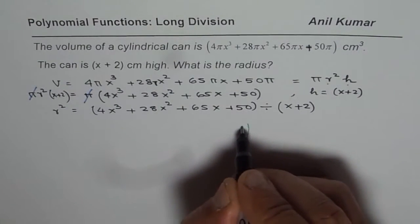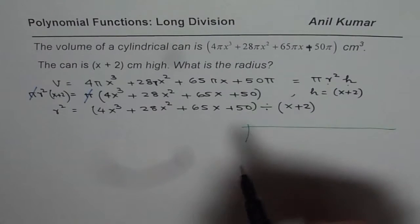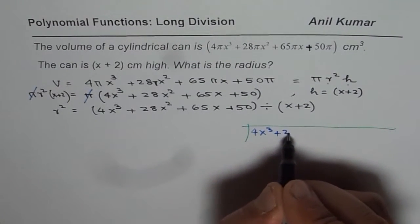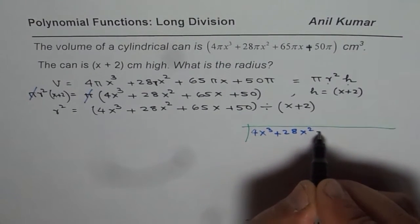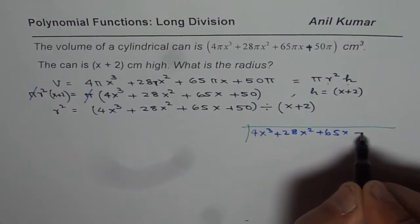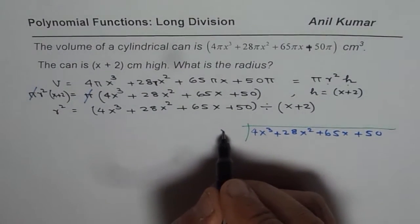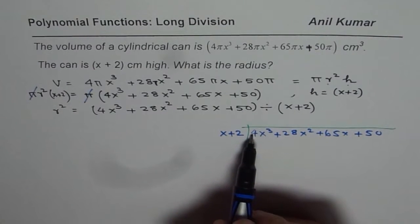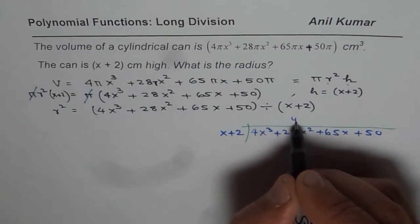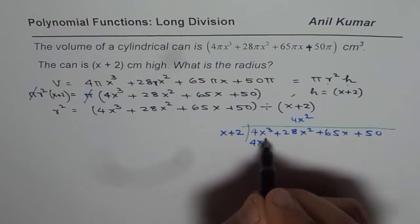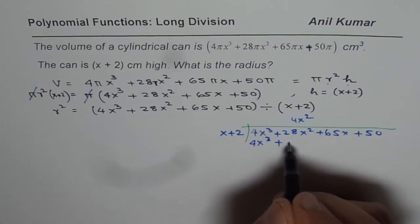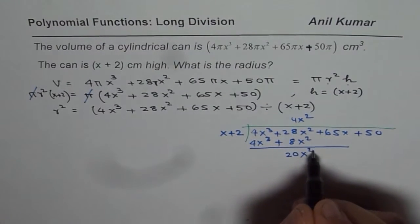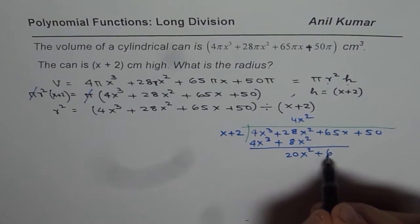So we have 4x³ + 28x² + 65x + 50 divided by x + 2. We need to multiply by 4x², so that comes here, 4x², then you get 4x³ + 8x². So when you take away, you get 20x² plus, bring down 65x.